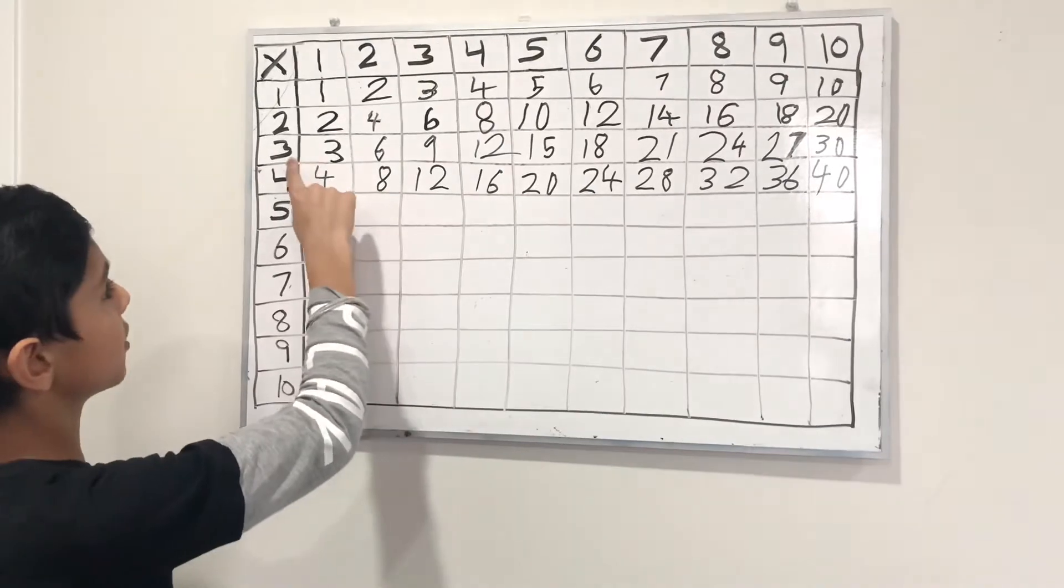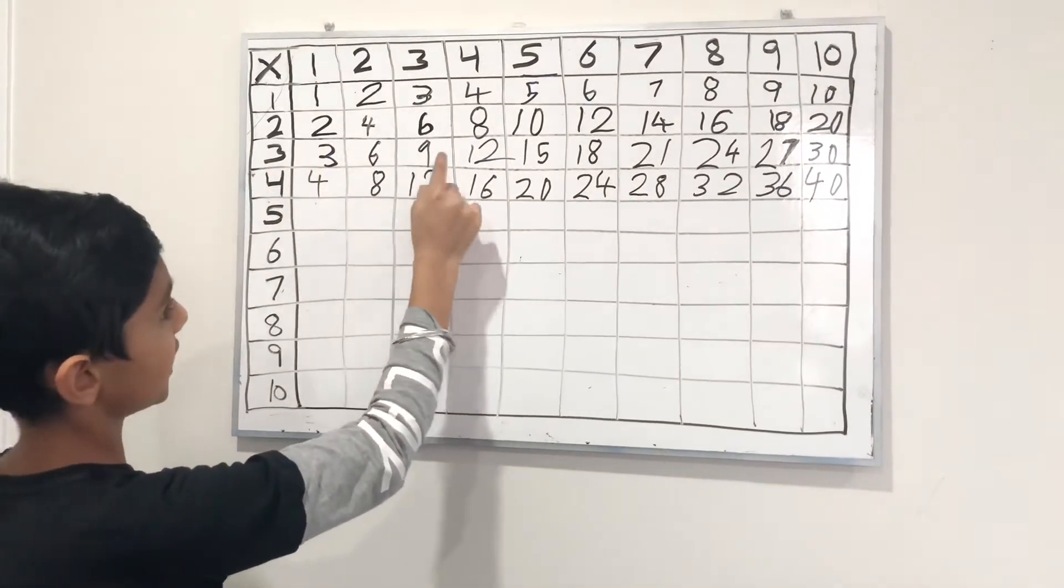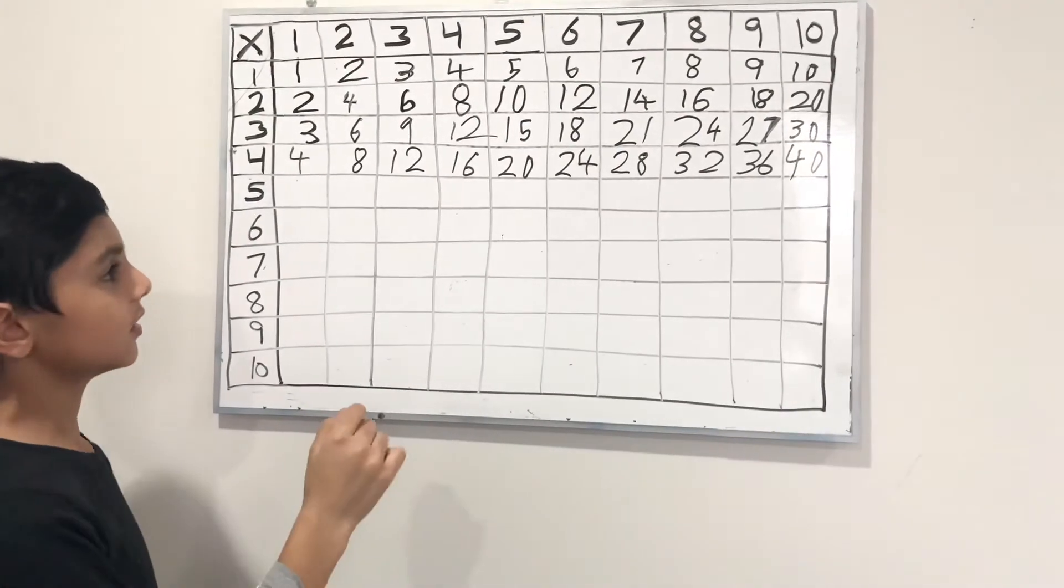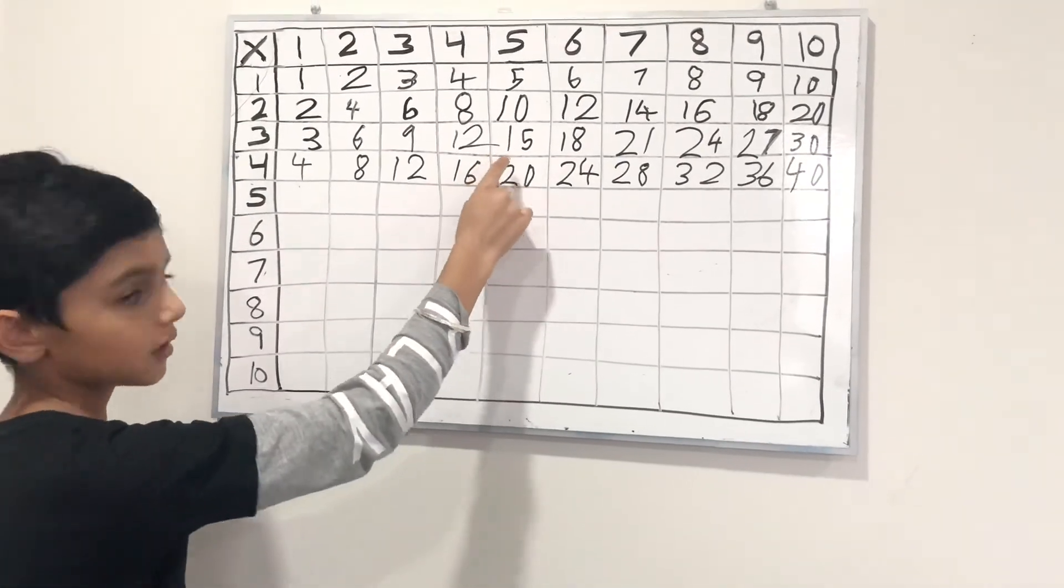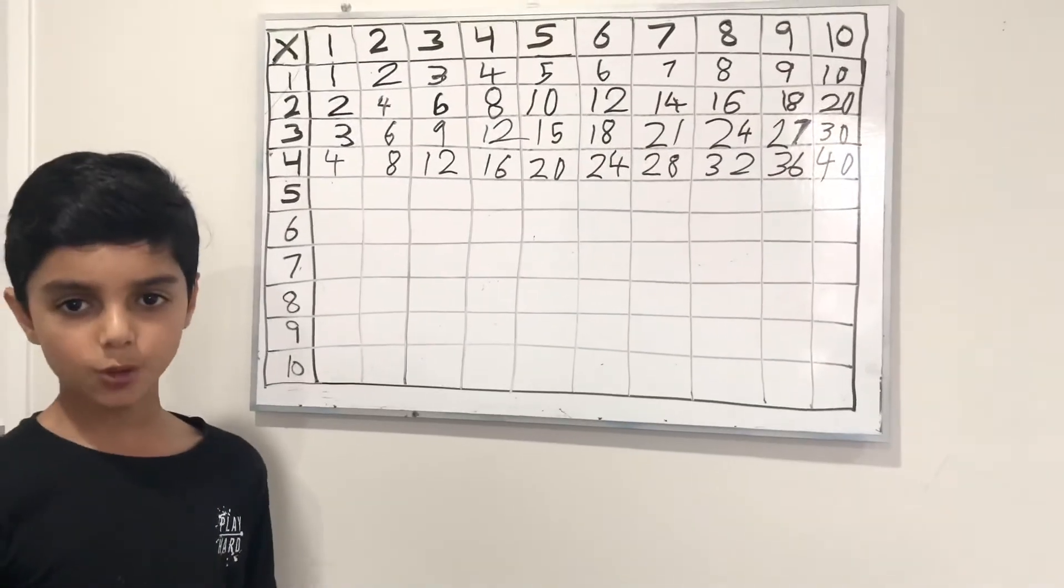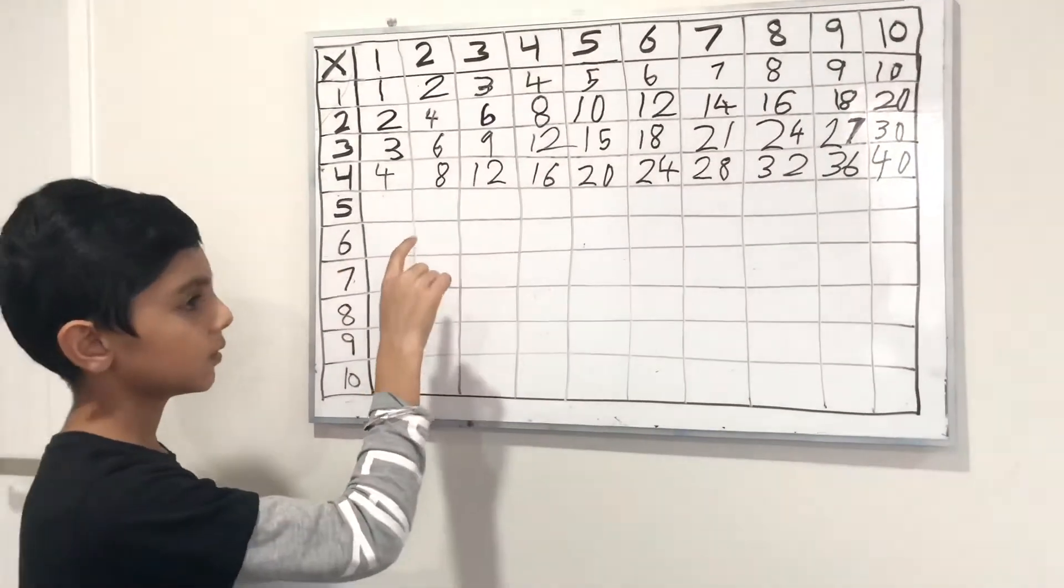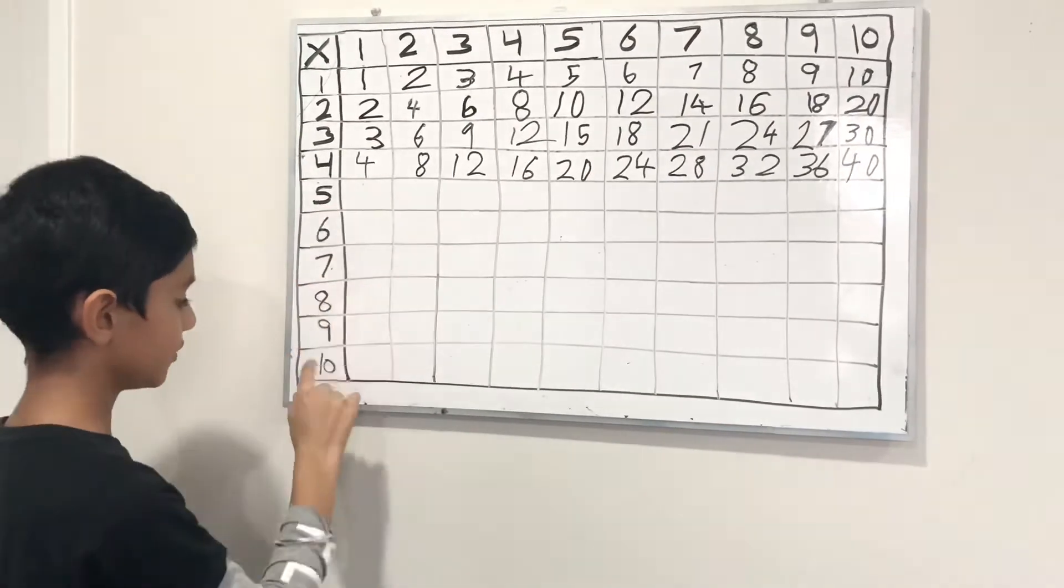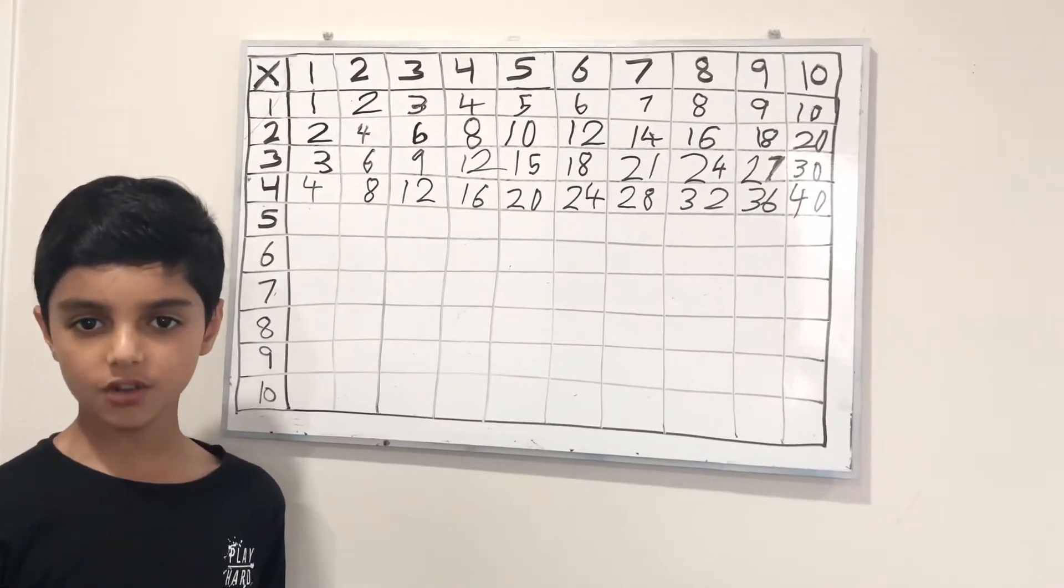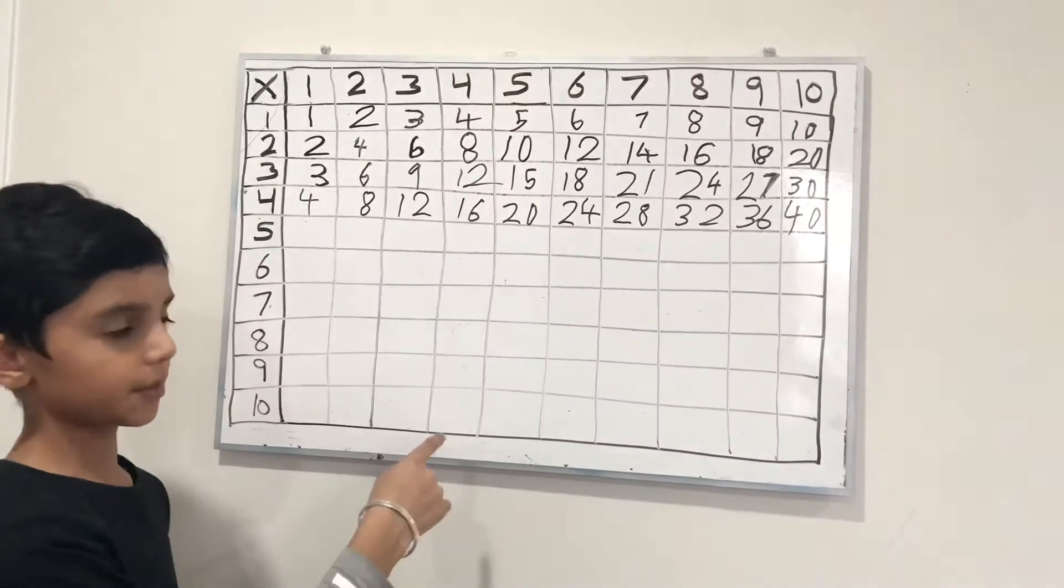And do you see a pattern of numbers like 3, 6, 9, 12? 3, 6, 9, 12. And I think the 15 will also be here. Now I am going to do the whole grid from 5 to 10, and then we will see the magic of numbers in this multiplication grid.